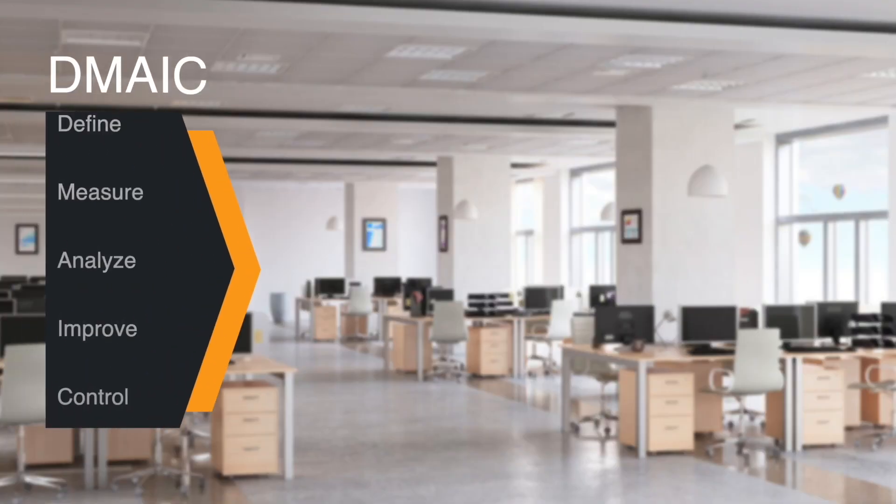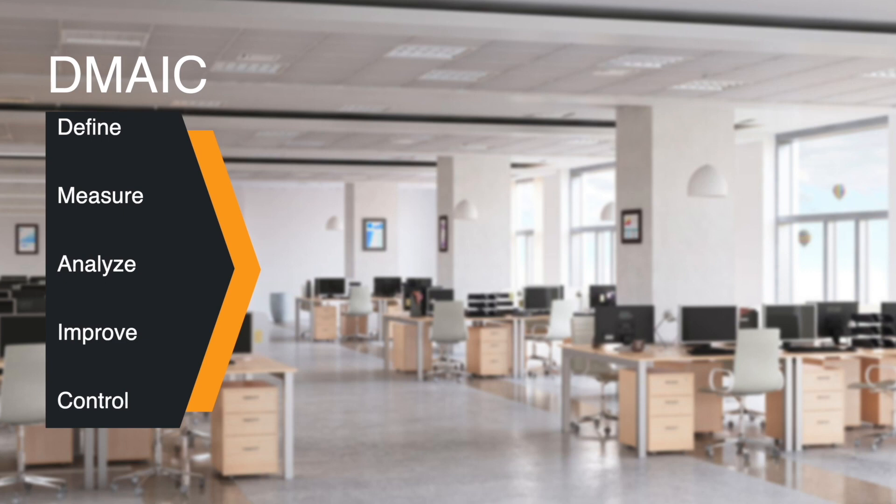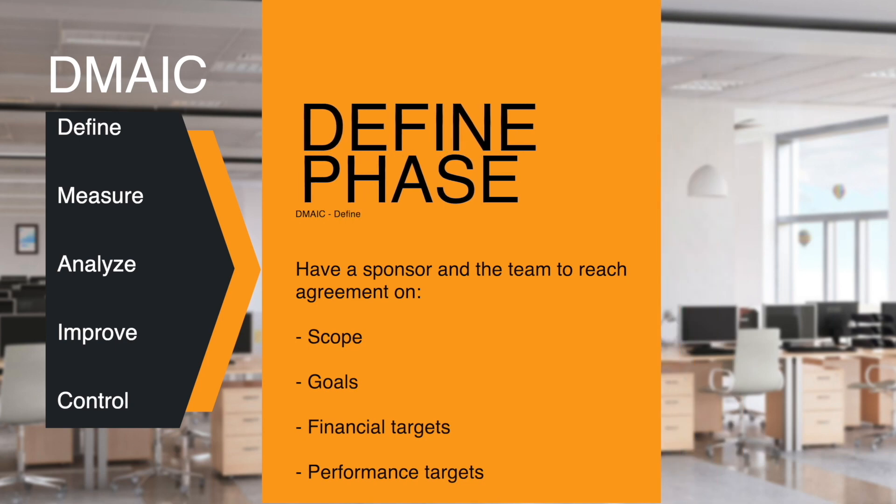The first phase of the DMAIC process is Define. In this phase, you need to have the team and sponsor reach agreement on the scope of the project, goals, and financials, as well as performance targets for the project.